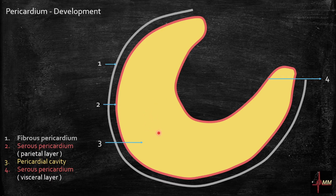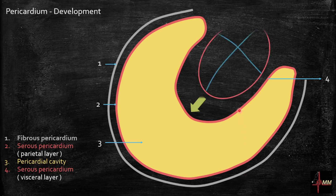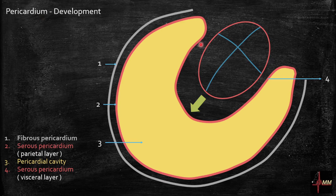This is the pericardial sac and it contains pericardial fluid. This sac is lined by a serous layer of pericardium and covered by fibrous pericardium. During development of the heart, the heart invaginates into the sac and gets its covering. The pericardium — 'peri' means around, around the heart — has two layers: the visceral layer and the parietal layer.